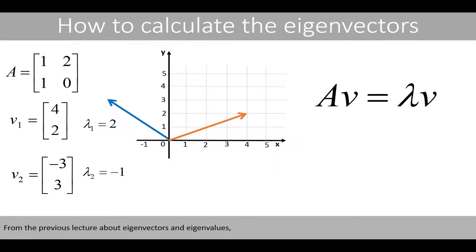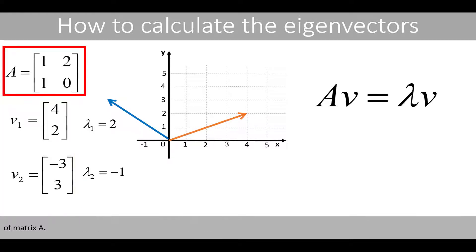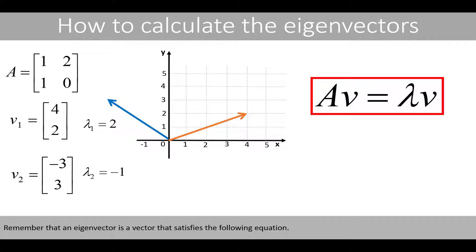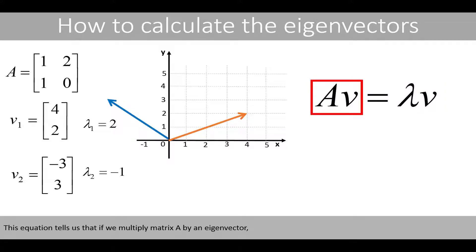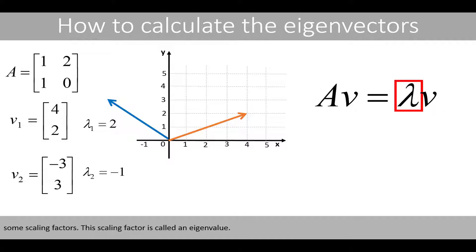From the previous lecture about eigenvectors and eigenvalues, we know that the following two vectors are eigenvectors of matrix A. Remember that an eigenvector is a vector that satisfies the following equation. This equation tells us that if we multiply matrix A by an eigenvector, we'll get a new vector which is equal to the original vector times some scaling factor. This scaling factor is called an eigenvalue.